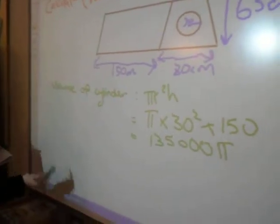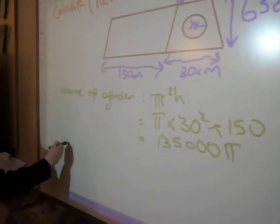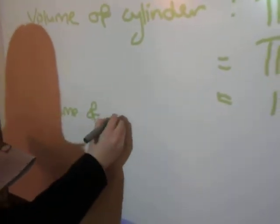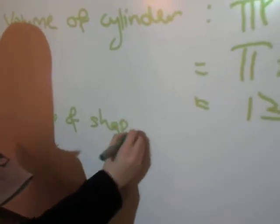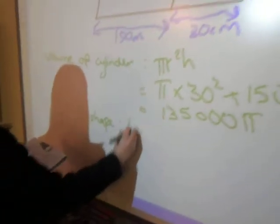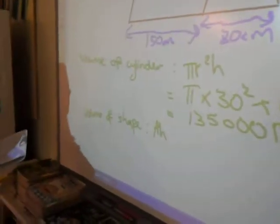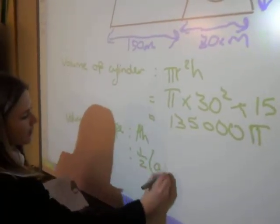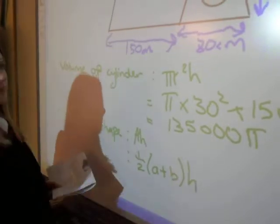We then work out the volume of the shape. The trapezium is the cross-section throughout the shape, so we use the formula half a plus b times the height.